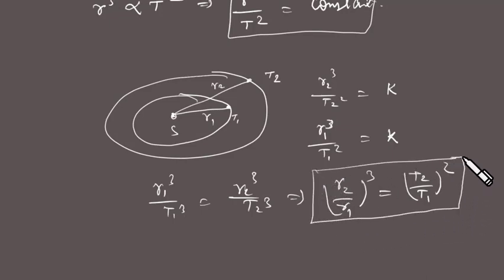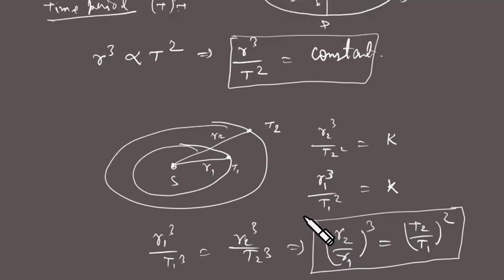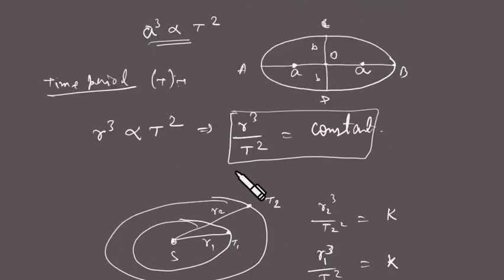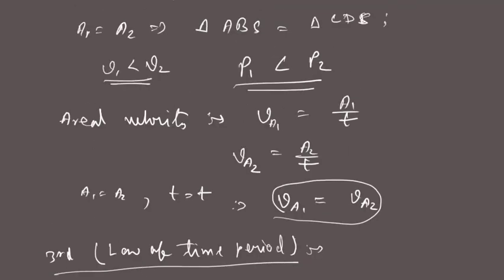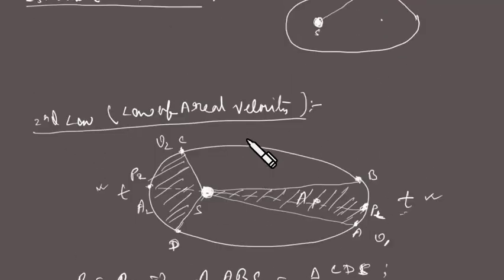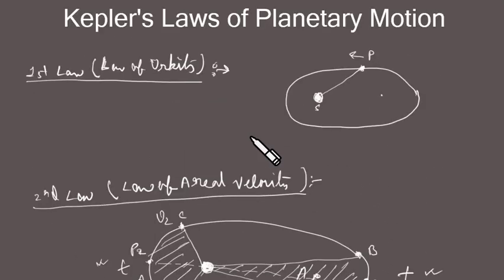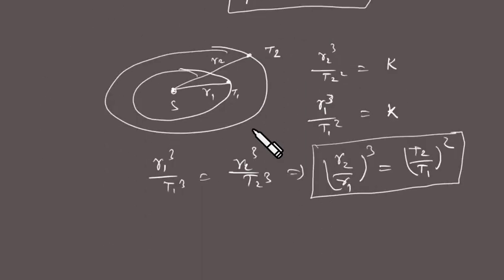So these are the three laws — the three statements of Kepler's Laws of Planetary Motion. That's all for today's lecture. See you in the next video. Till then, take care.